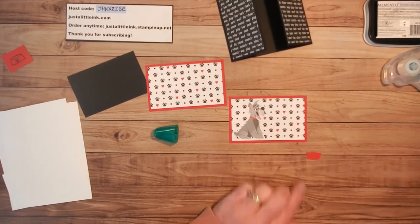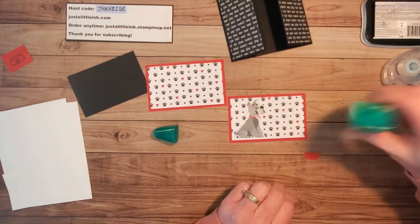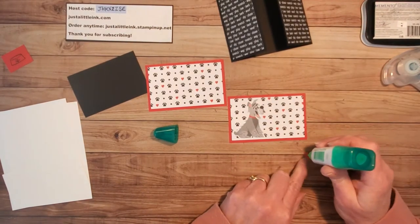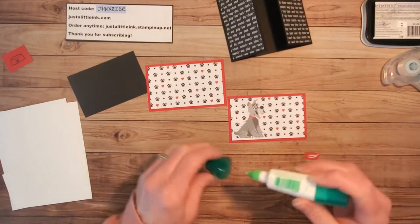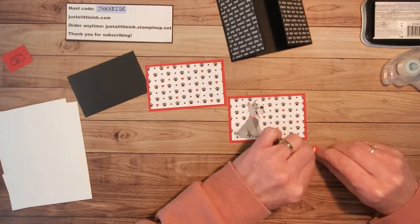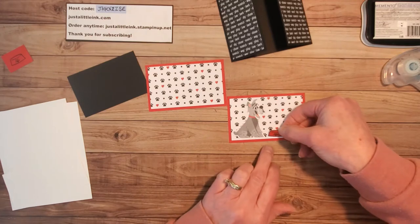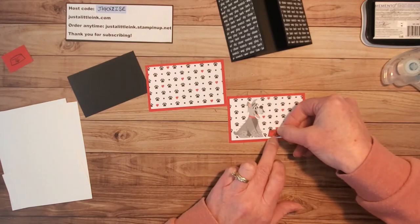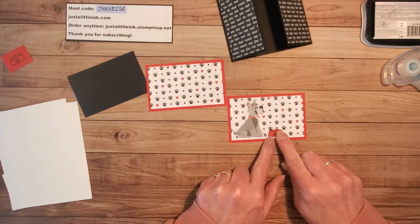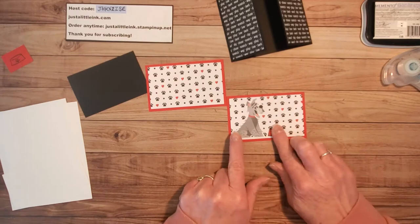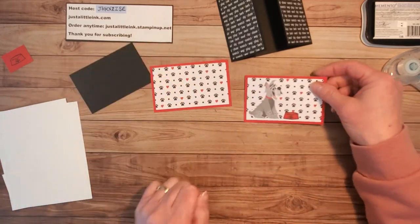So then I'm going to put a little dog bowl right here in the front, just a little bit of pop of color. Fairly simple, not hard at all to do your stamping.